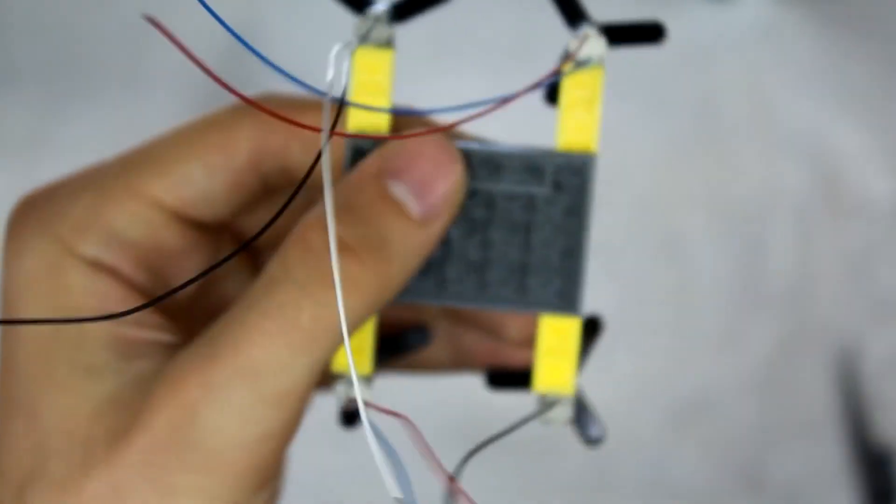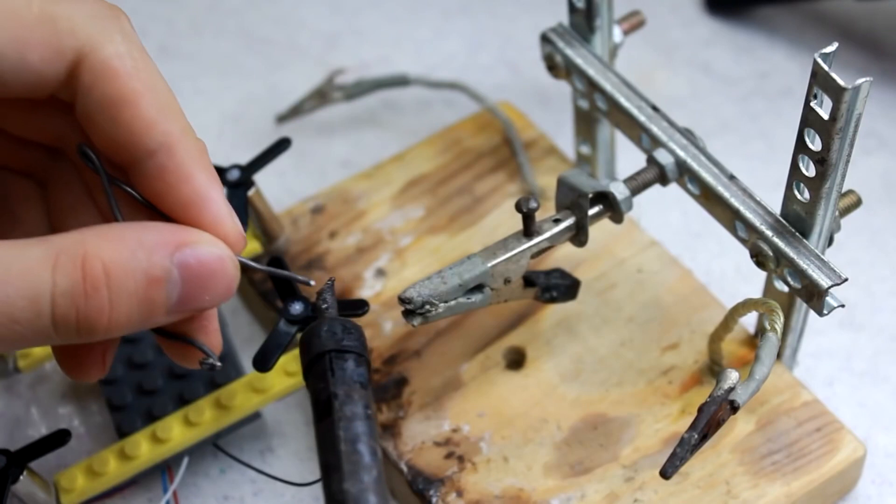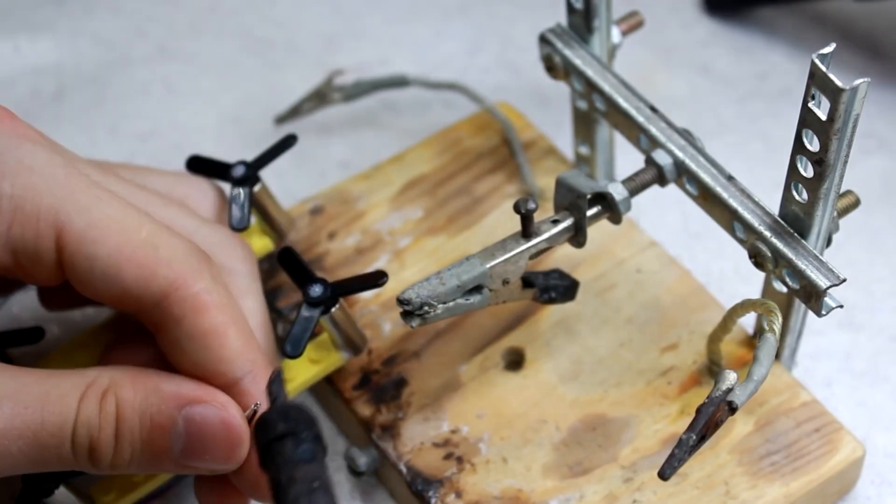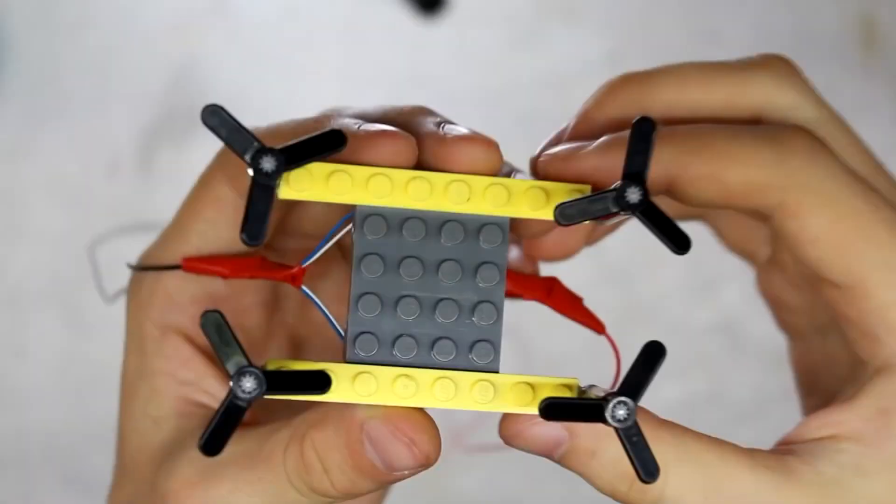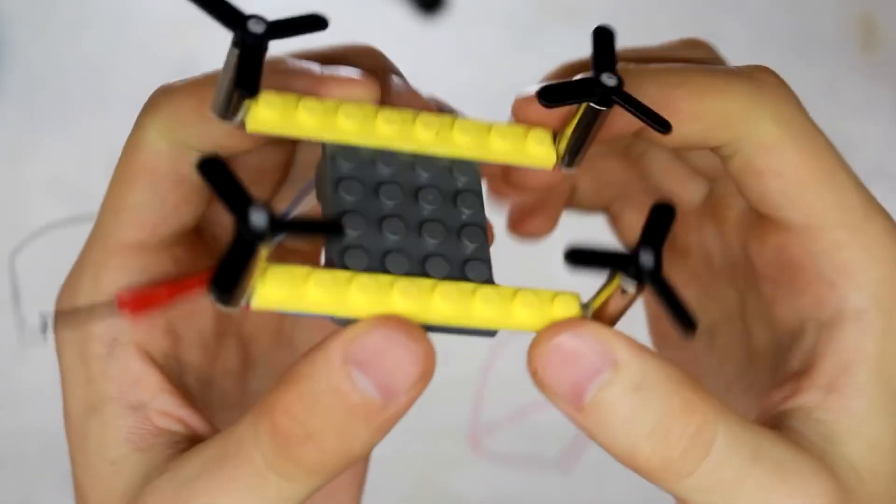From the bottom of the base, I arrange all the wires and then proceed to soldering. Every motor was soldered in parallel. As a result, to connect to the power source, I have two wires.